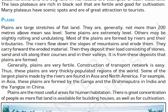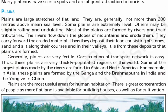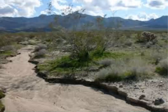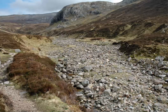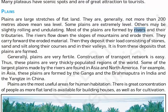Plains are a large stretch of flat land. They are generally not more than 200 meters above mean sea level. Most plains are formed by rivers and their tributaries. When a river flows, it takes away all the soil and mud with it, and that is how a plain surface is formed. If you see the dry bed of a river, it is a complete long stretch of flat land. A lot of stones and sand are deposited along the course in the valley, and it is from these deposits that plains are formed.